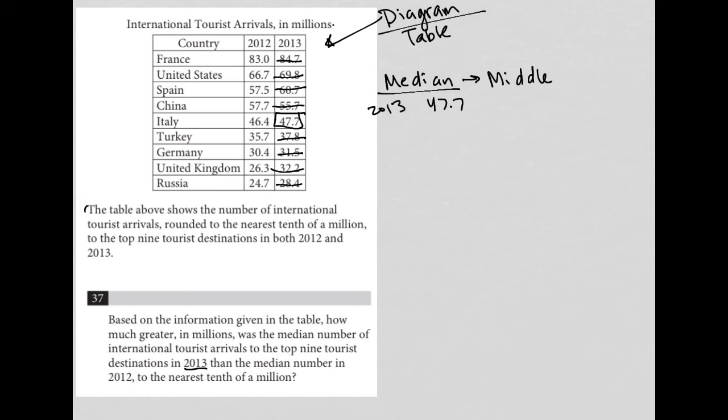So again, back to the question, based on the information given in the table, how much greater in millions was the median number of the international tourist arrivals of the top nine tourist destinations in 2013 than the median number in 2012 to the nearest tenth? So this is 2013's number.